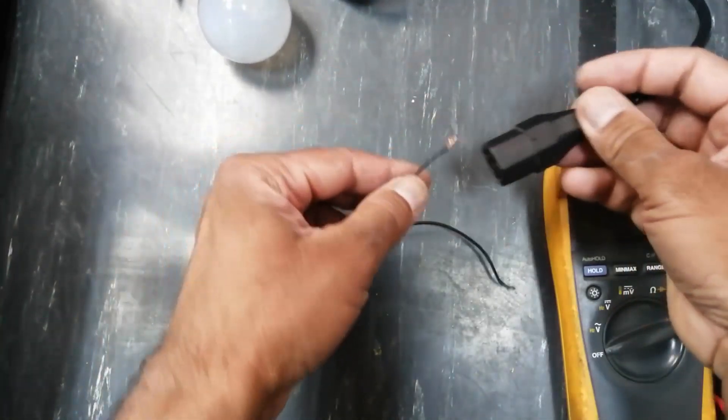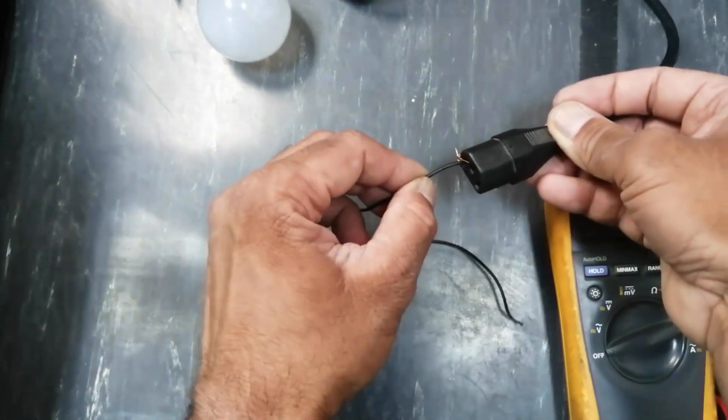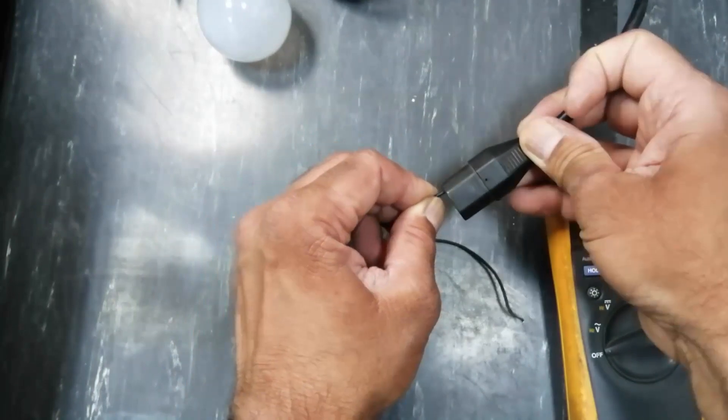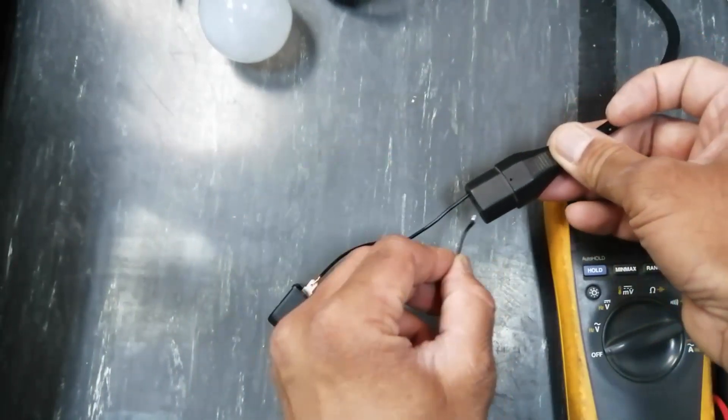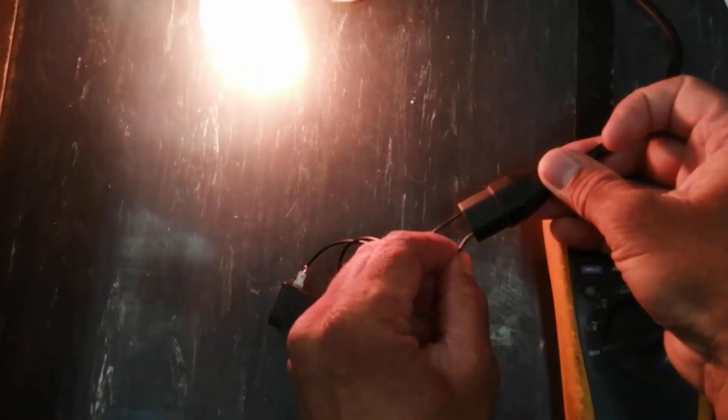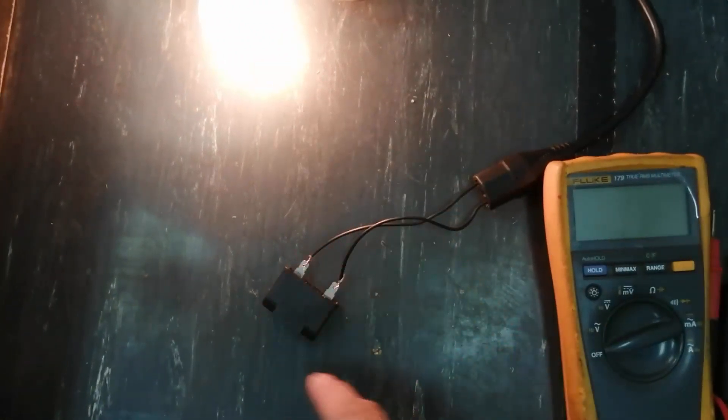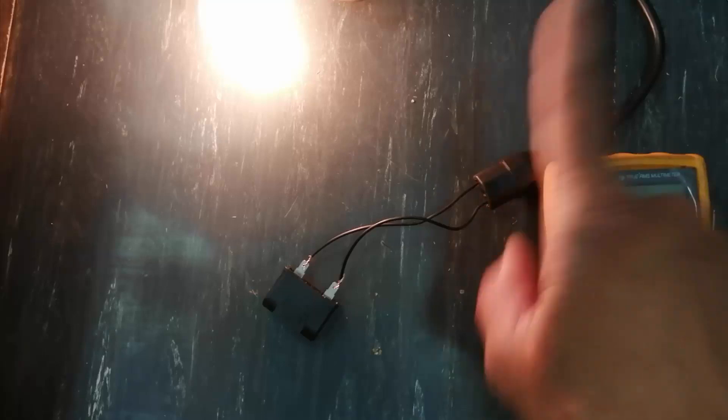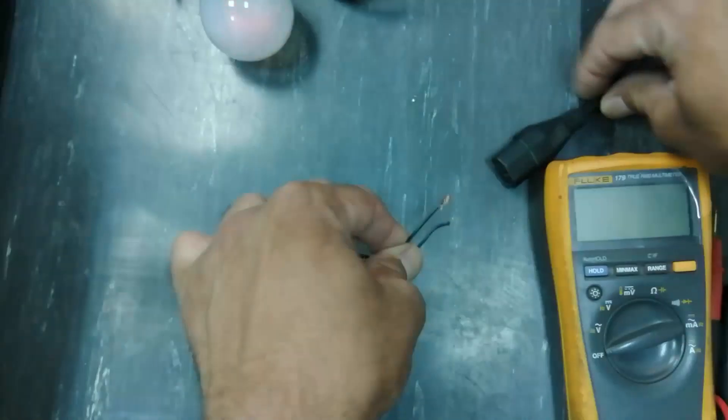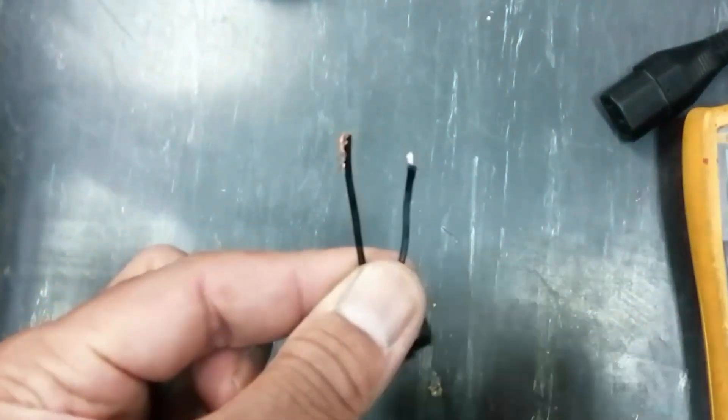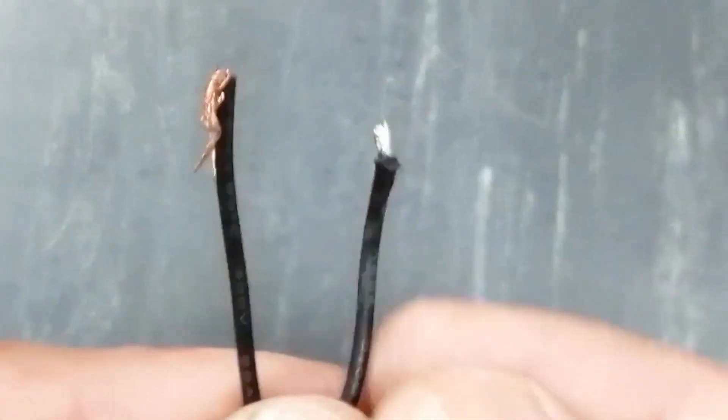It's now glowing, so this means it is passing the electrical current. Now remove the wires and don't touch the wires. Check again—now the lamp is glowing. I will remove the wires.